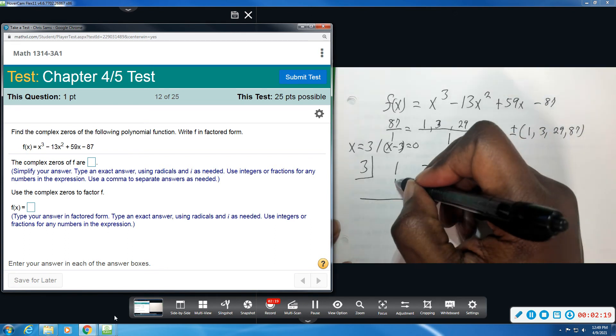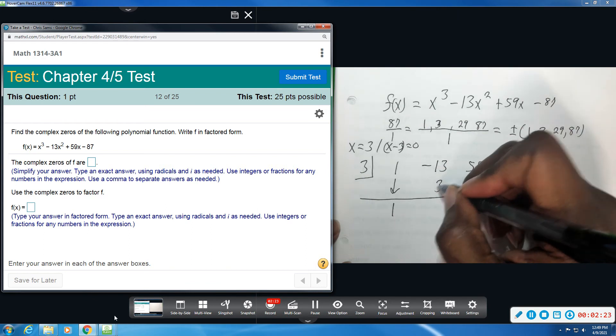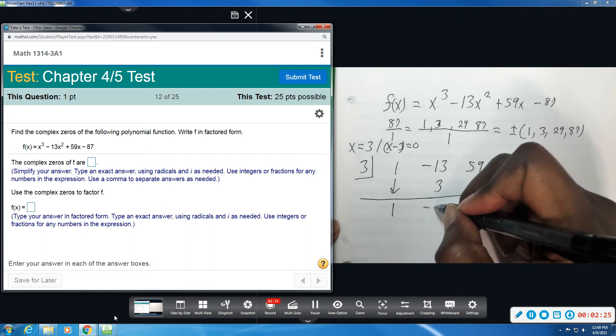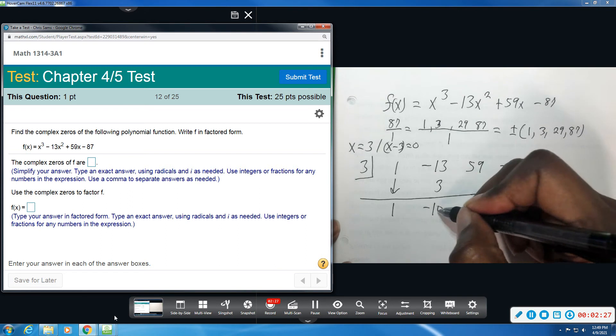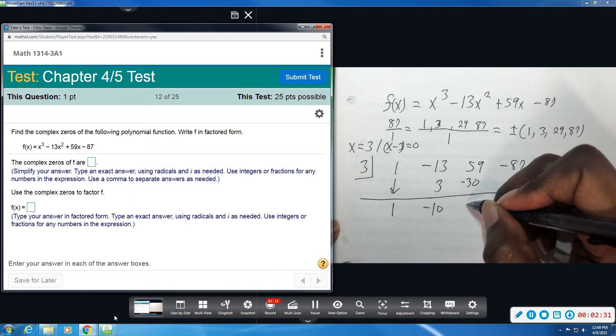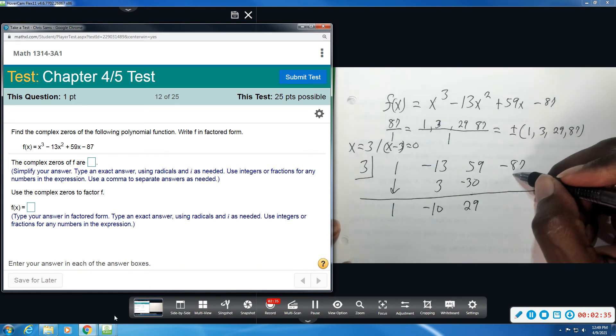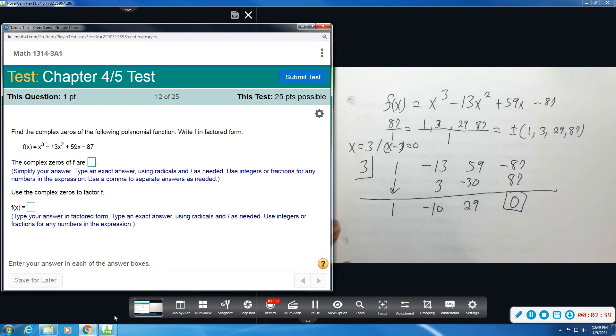All right, you bring your first term straight down. 3 times 1 is 3. Subtract, we get -10. 3 times -10 is -30. And subtract, we get 29. And 3 times 29 is 87. And we get 0. So it works out. 3 is one of my zeros.